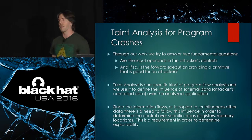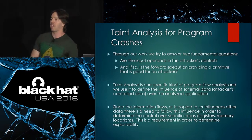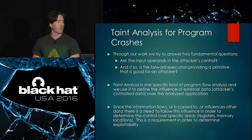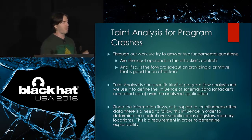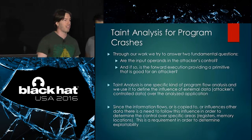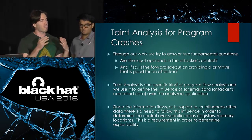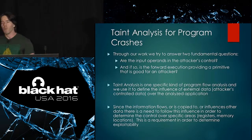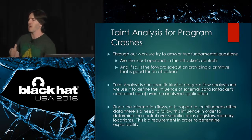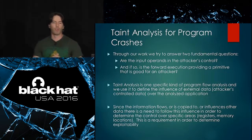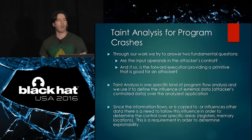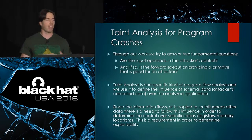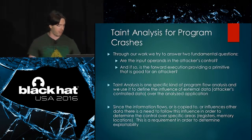When defining whether data comes from attacker-controlled input, we do a very specific instruction-by-instruction tracing — very detailed taint analysis where we propagate taint. For the forward direction, instead of instruction-by-instruction, we try to operate at a less detailed level so we can let the program run and observe what happens.